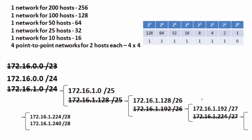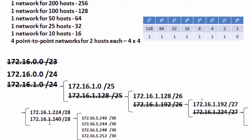I only need one 16-host subnet. I take the second one — 172.16.1.240/28 — and use it to create four subnets of four hosts each. Changing the mask to /30 gives: 172.16.1.240/30, 172.16.1.244/30, 172.16.1.248/30, and 172.16.1.252/30.